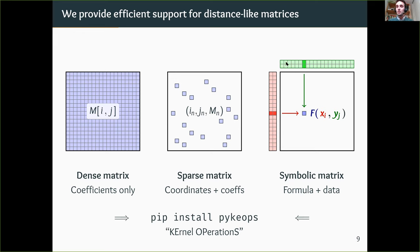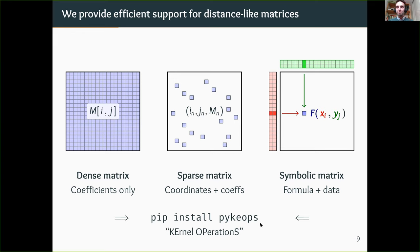Most matrices we use in applied math and AI have a low Kolmogorov complexity — they are given by a small program. Supporting this abstraction is challenging, but we've done it. You just have to install the library called KeOps, available on pip. KeOps stands for kernel operations.